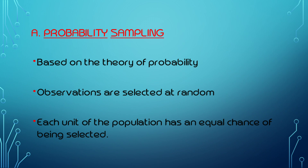Each unit of the population has an equal chance of being selected. If you have one population, you can select from it with an equal chance for everyone.